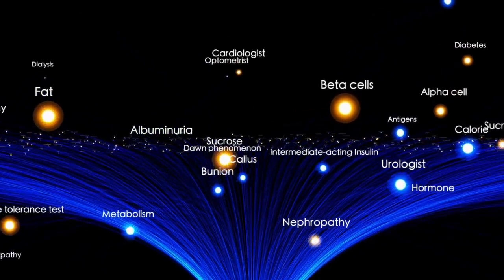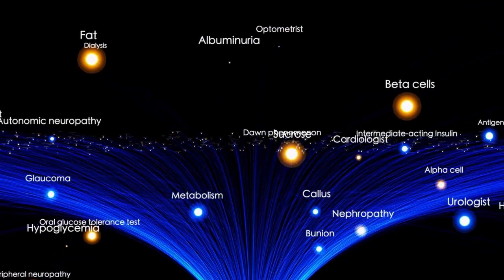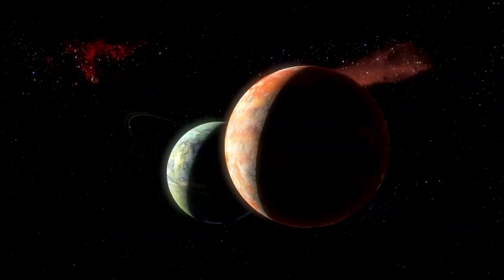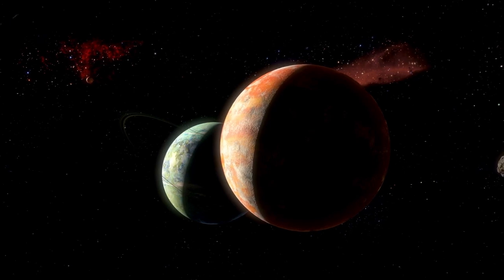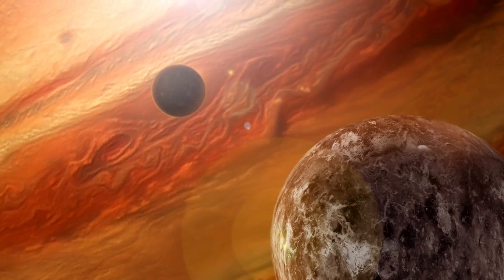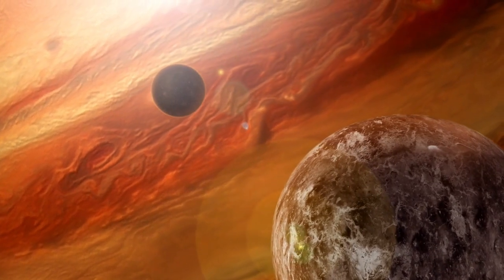In around 5 billion years, it will begin to run out of hydrogen fuel in its core. When that happens, the sun will swell into a red giant just like the one that consumed Kepler-70b. It will grow large enough to engulf Mercury and Venus and possibly Earth.